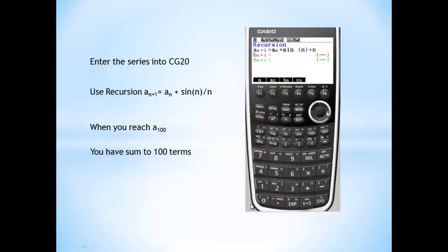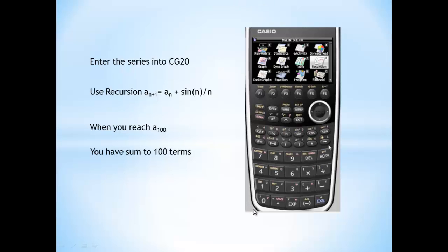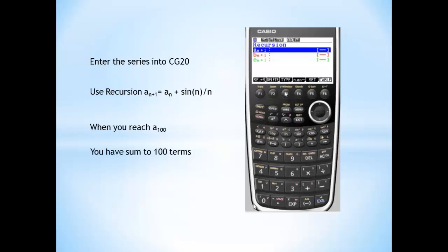So this is how it works. From the main menu, select recursion. Then select the type of recursion in F3. Then we are going to select A sub n from F2 and plus sin of open bracket n which is in F1 over n in F1 again.